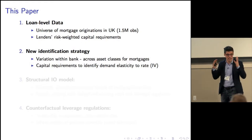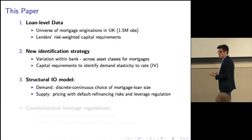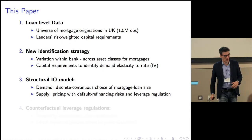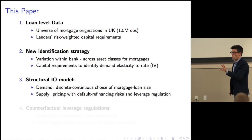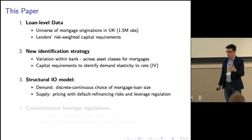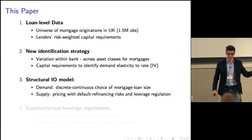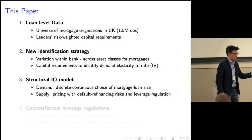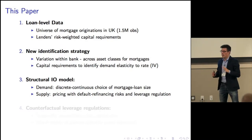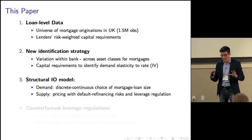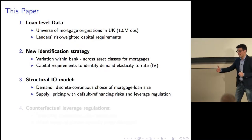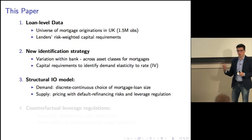I'm going to take this variation into a structural model inspired by the industrial organization literature. The model has two components: on the demand side, borrowers make a discrete choice of which mortgage product to take and also a continuous choice of how much to borrow. On the supply side, lenders price these mortgages optimally, accounting for the two main risks in the market — default and refinancing — and most importantly for the regulation in place.